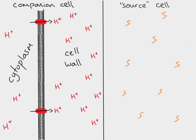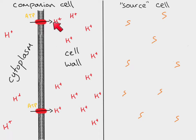Because these are proton pumps, ATP is used. The pumps maintain a gradient by moving protons against the concentration gradient — from a lower concentration in the cytoplasm to a higher concentration in the cell wall — continuously.